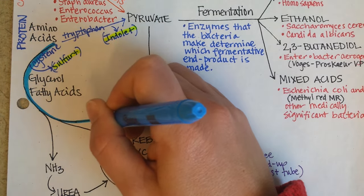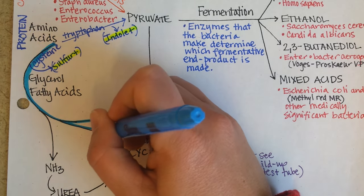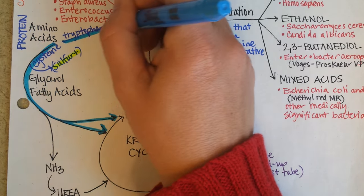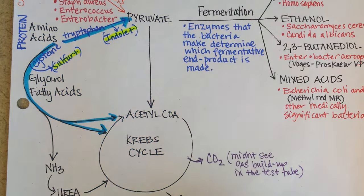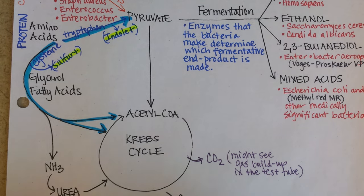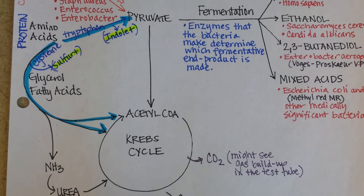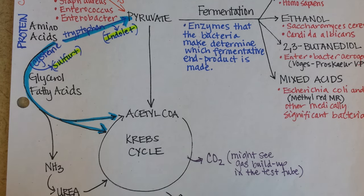Some amino acids can be converted into acetyl-CoA or other products, while tryptophan can be converted straight into pyruvate. There are 20 different amino acids and different ways they can be used to gather ATP for the cell. What we're concerned with in lab is identifying which tests look at these different amino acid metabolic pathways for the bacteria we study.